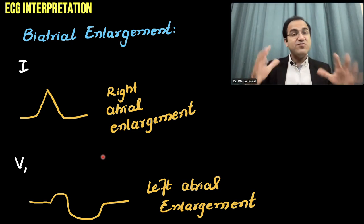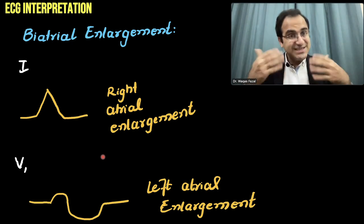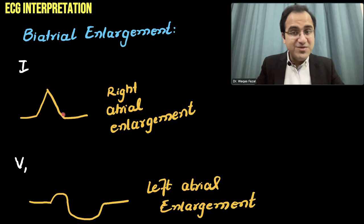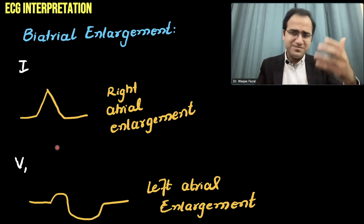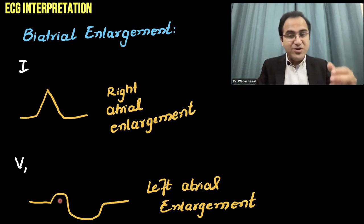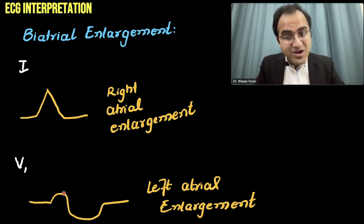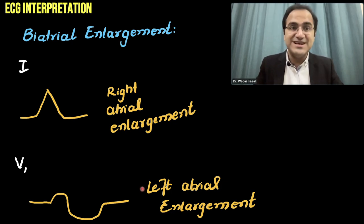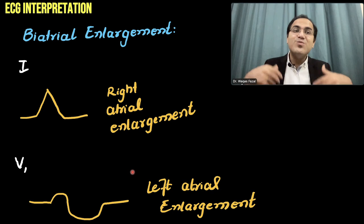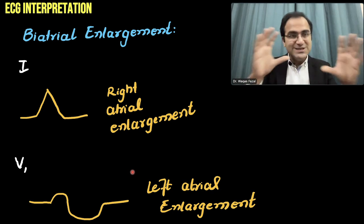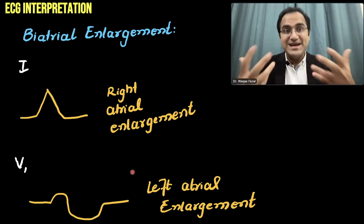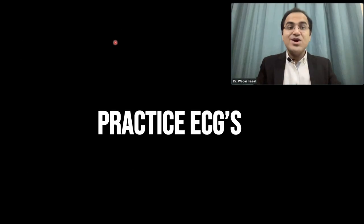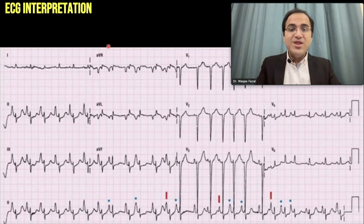Now, what if there is biatrial enlargement — if both atria are enlarged? In such a case, in some leads you will be able to see the peaked P wave showing right atrial enlargement, and in V1 you will appreciate the biphasic P wave with a smaller positive deflection and a huge negative deflection indicating left atrial enlargement. The ECG will show both characteristics — both features will be present, indicating biatrial enlargement.